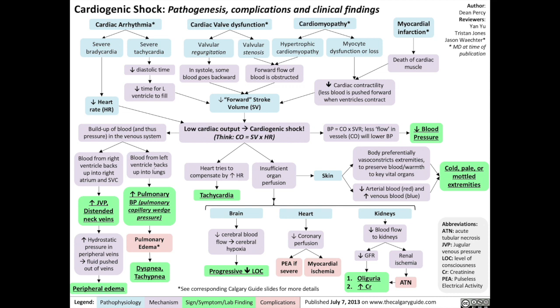Blood from the left ventricle also backs up into the lungs, resulting in increased pulmonary blood pressure, which can be measured as pulmonary capillary wedge pressure, resulting in pulmonary edema, which results in dyspnea — shortness of breath — and tachypnea, an increased breath rate.